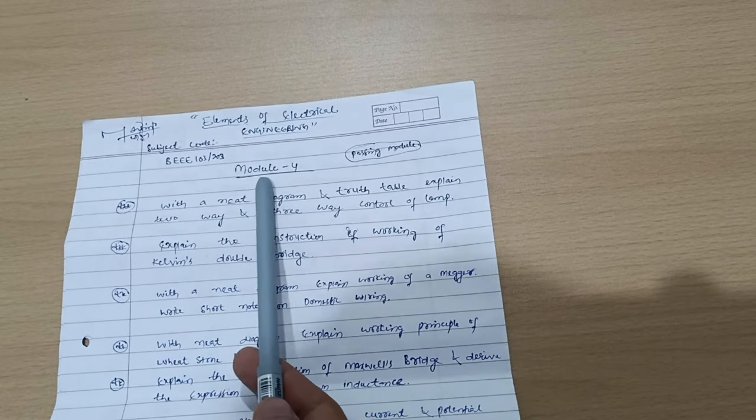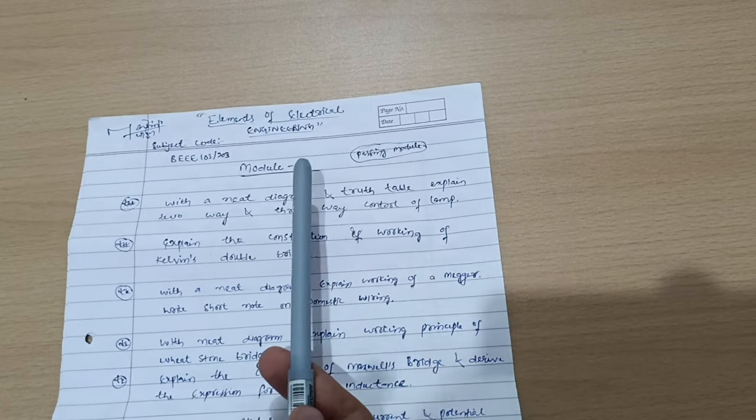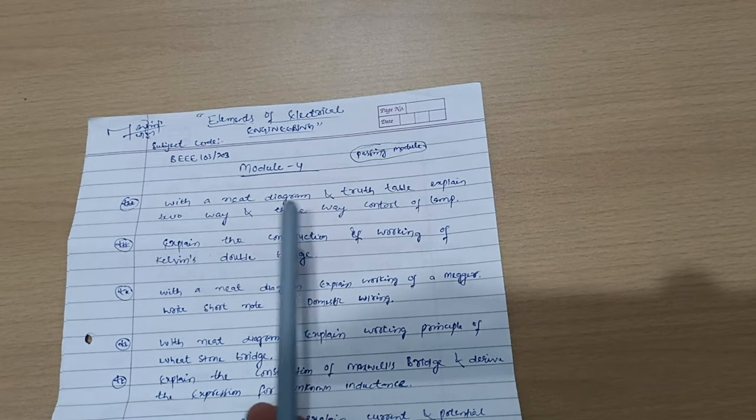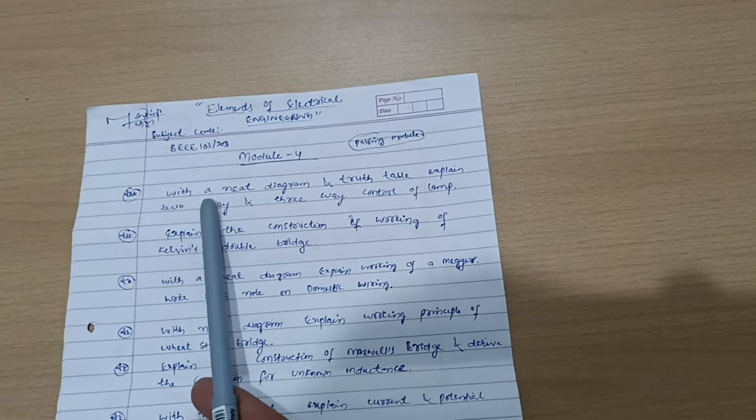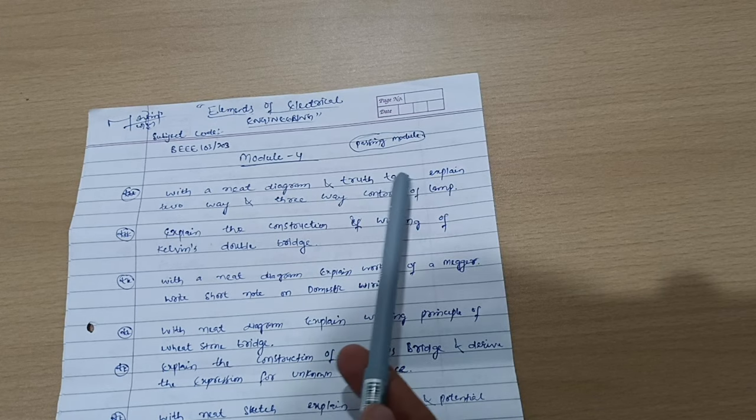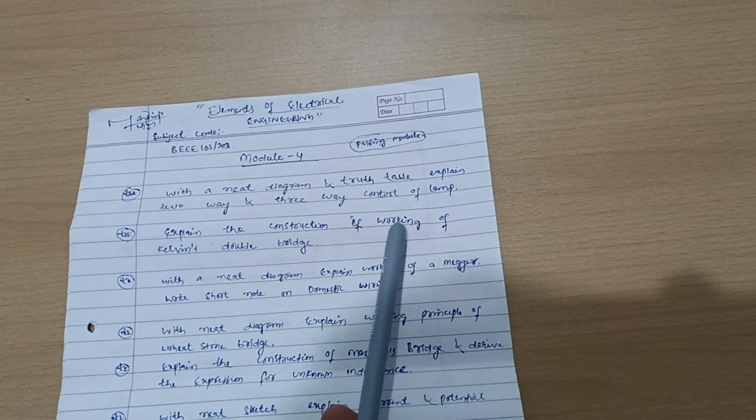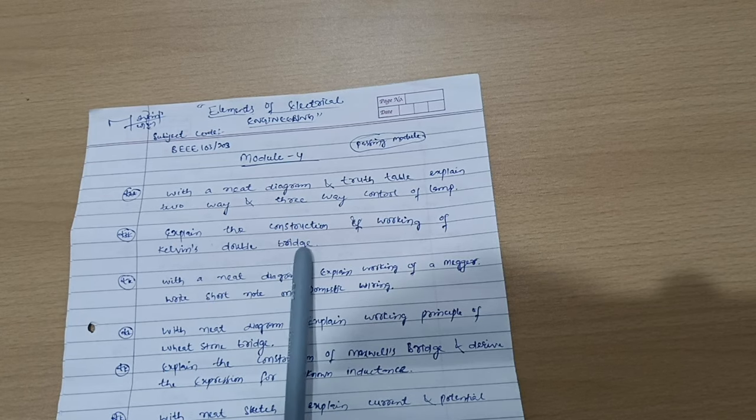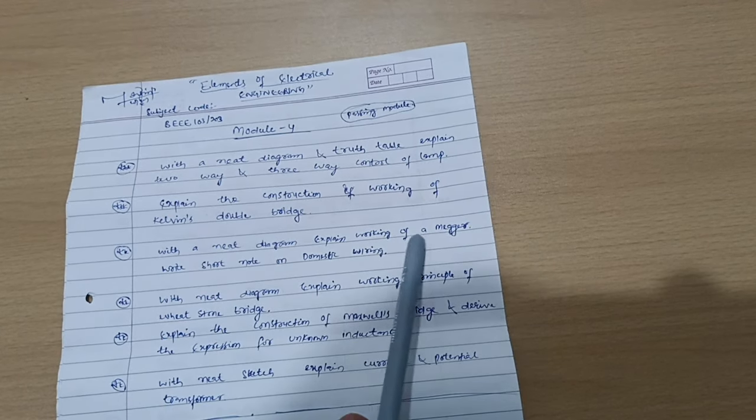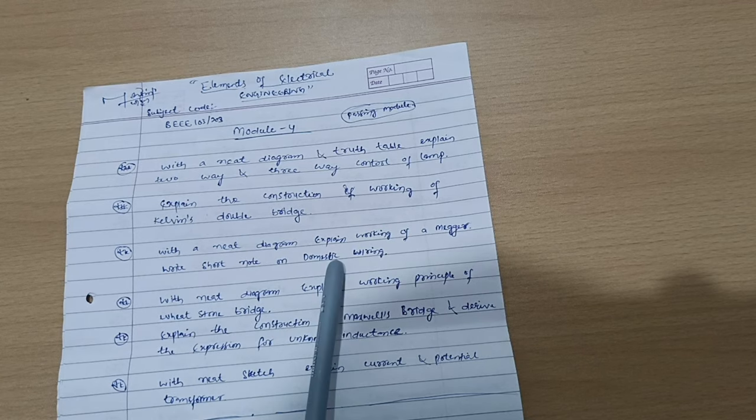First, Module 4, it is the passing module in which you can easily score 20 marks by covering these important questions like with a neat diagram and truth table, explain two-way and three-way control of lamp. Explain the construction and working of Kelvin's double bridge. With a neat diagram, explain working of megger. Write short note on domestic wiring.